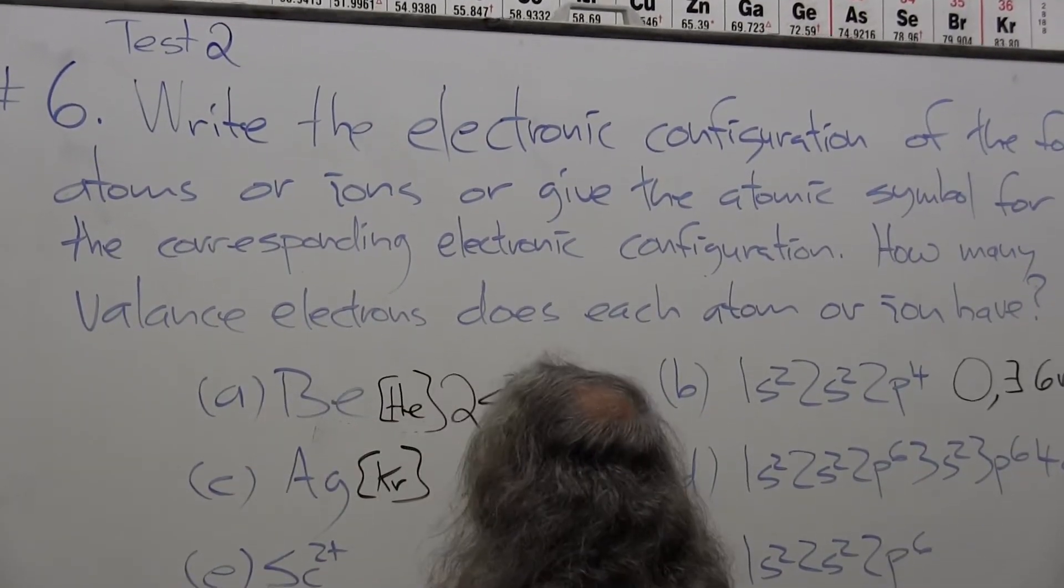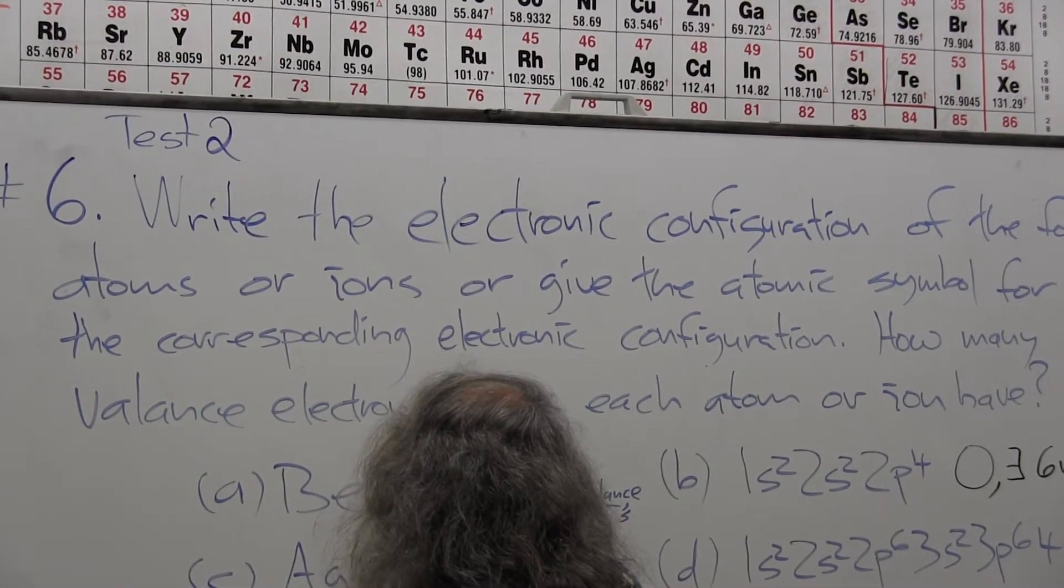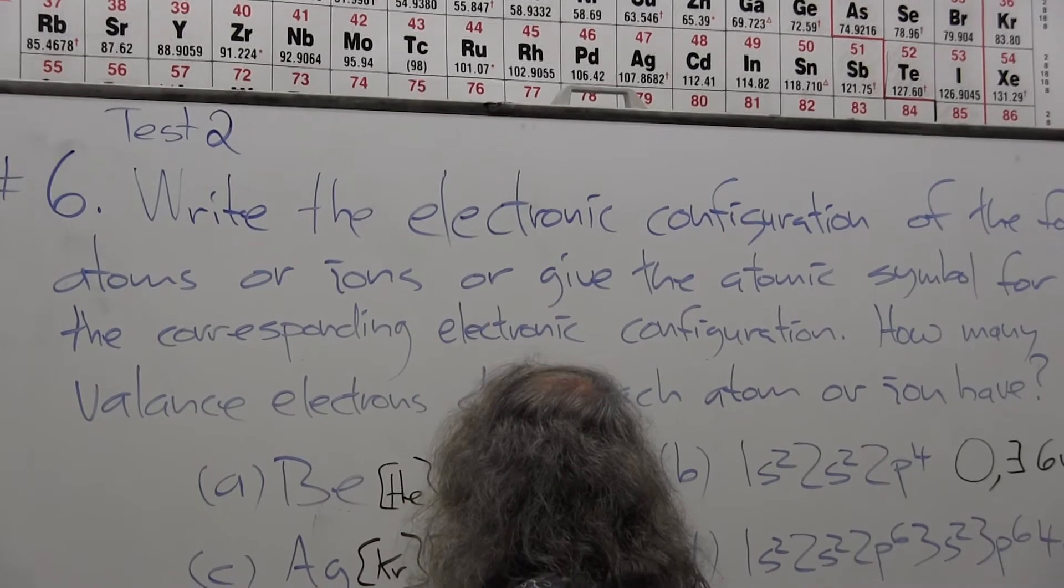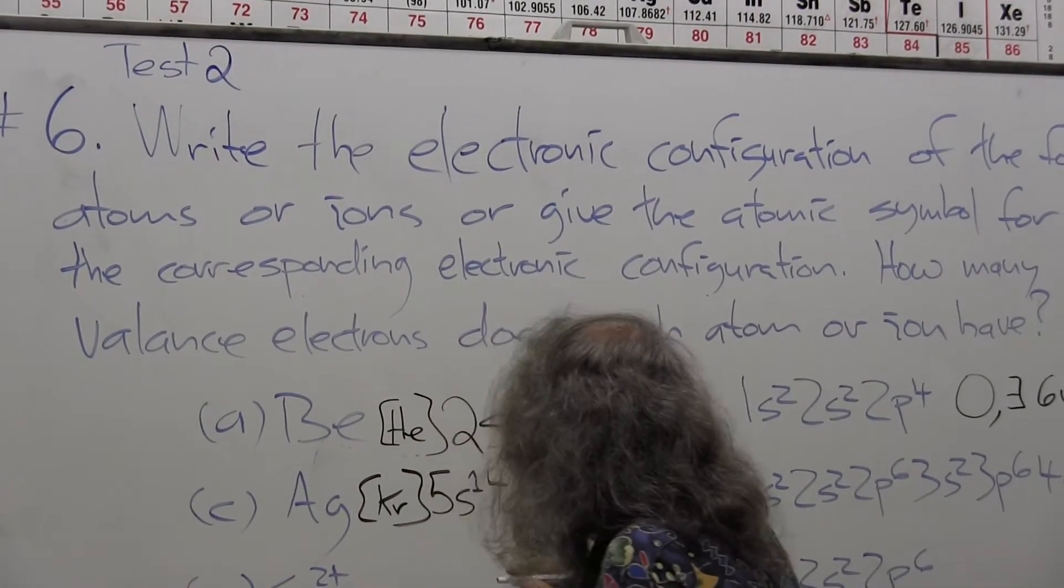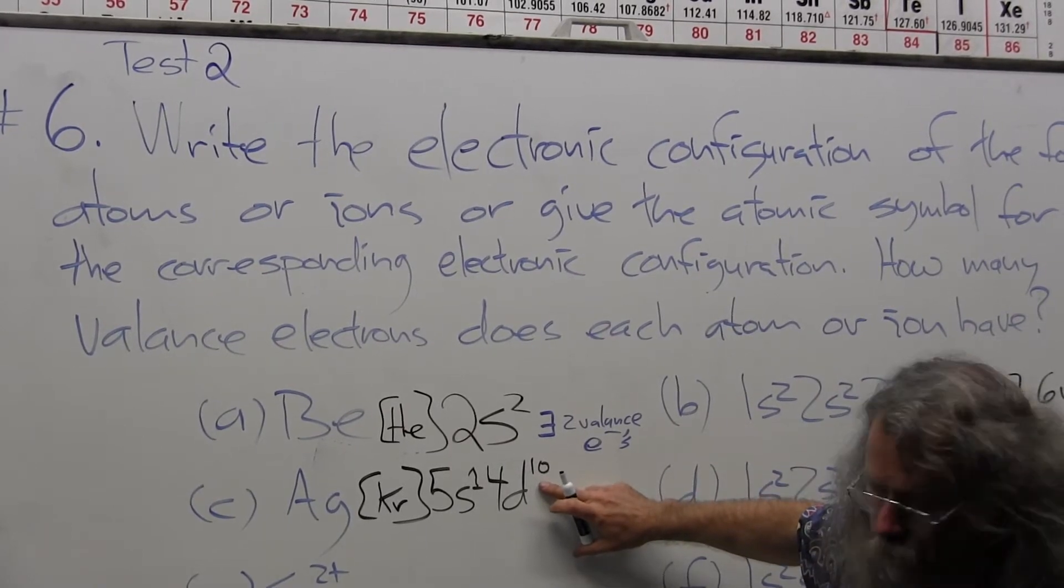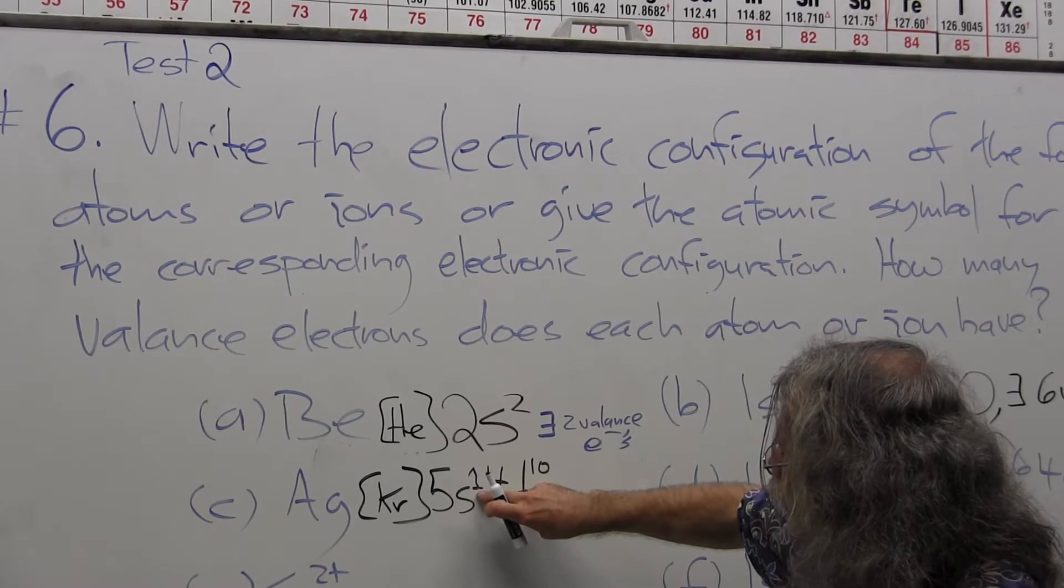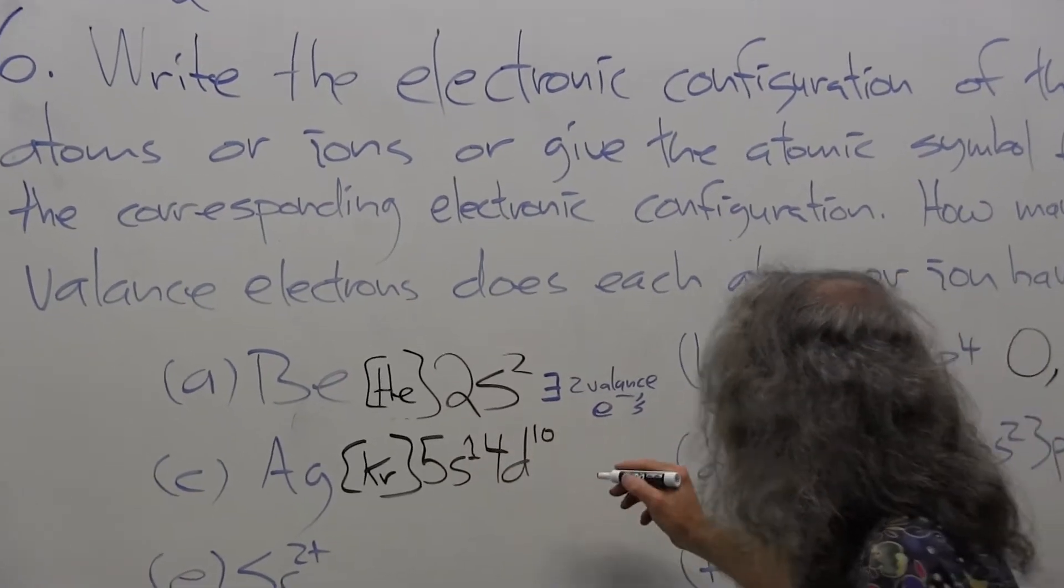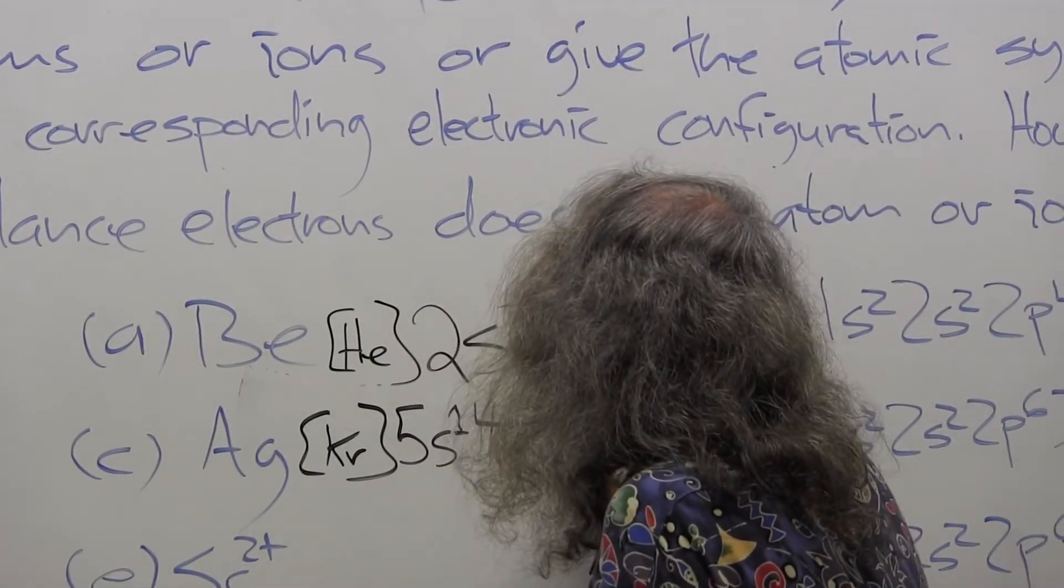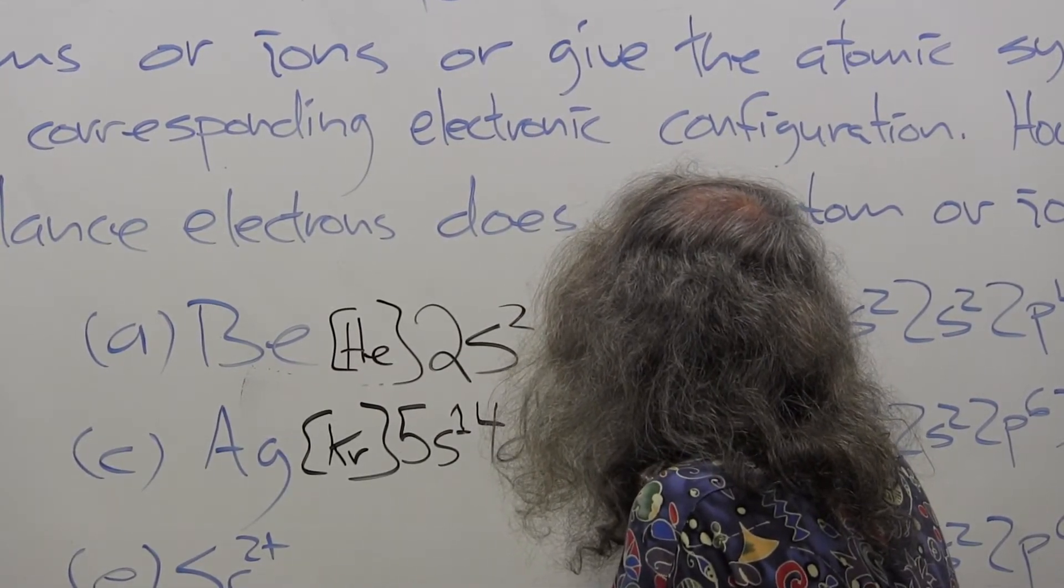Then it's going to be 5s1 4d10, which gives me zero overall angular momentum. That gives me how many valence electrons? I would count 10, 11. So there exist 11 valence electrons.